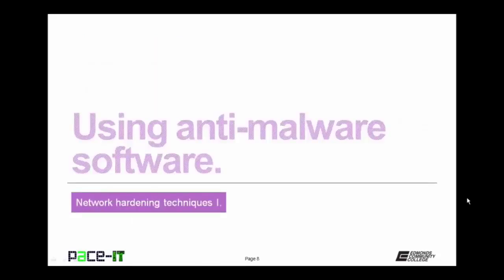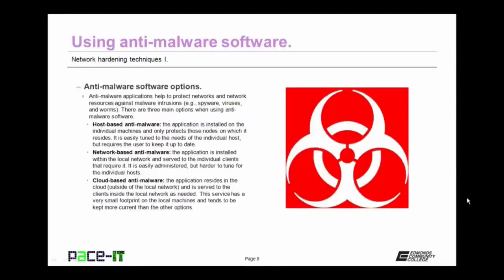Let's move to using anti-malware software. Anti-malware applications help to protect networks and network resources against malware intrusions, as in spyware, viruses, and worms. There are three main options. There's host-based anti-malware, where the application is installed on the individual machines and only protects those nodes on which it resides. It's easily tuned to the needs of the individual host, but requires that the user keep it up to date. Then there's network-based anti-malware, where the application is installed within the local network and served to the individual clients. It is easily administered, but harder to tune for individual hosts.